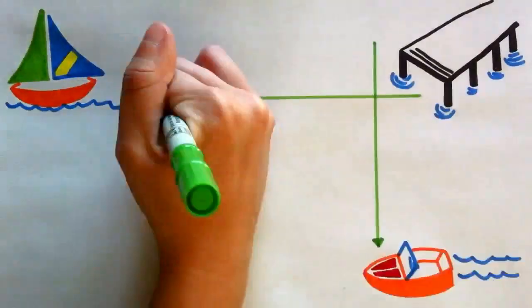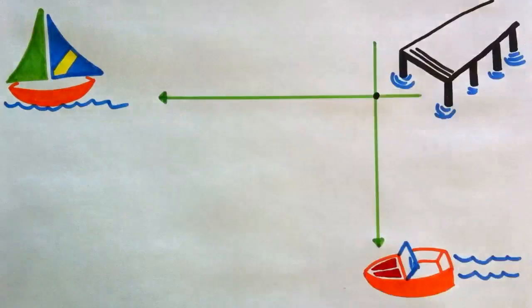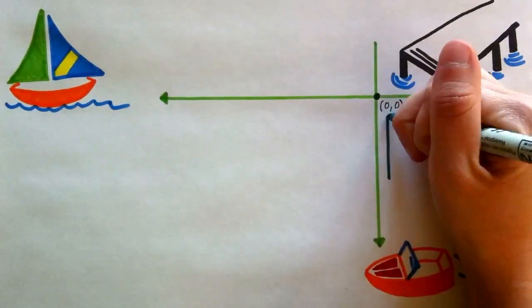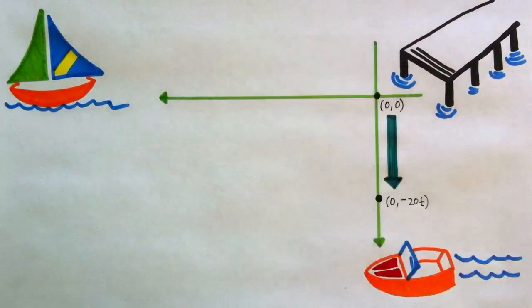Let's look at this more closely. We've got one boat heading directly south away from the dock, leaving at 2 p.m. and traveling at 20 kilometers per hour. If we treat the dock as the origin of an xy-coordinate system, then at any time after 2 p.m., this boat is at the point (0, -20t), where t is the time after 2 p.m. in hours.